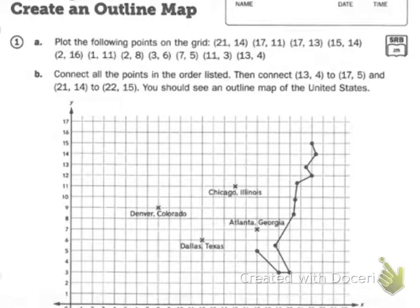It says for you to plot the following points on the grid: 21 and 14, 17 and 11, 17 and 13, 15 and 14, 2 and 16, 1 and 11, 2 and 8, 3 and 6, 7 and 5, 11 and 3, 13 and 4. I'm going to show you a quick example of how we mark these on the grid, which you all should know how to do. You guys have plenty of practice with this.